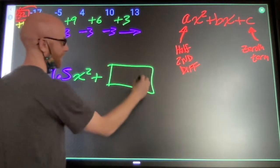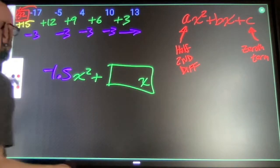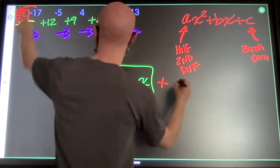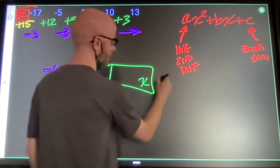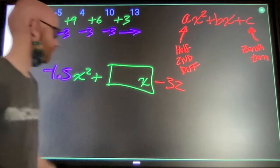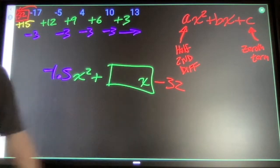Plus, hold off on this for a minute, something times x. Plus negative 32, or I could say minus 32, either way. This formula is going to build that sequence.